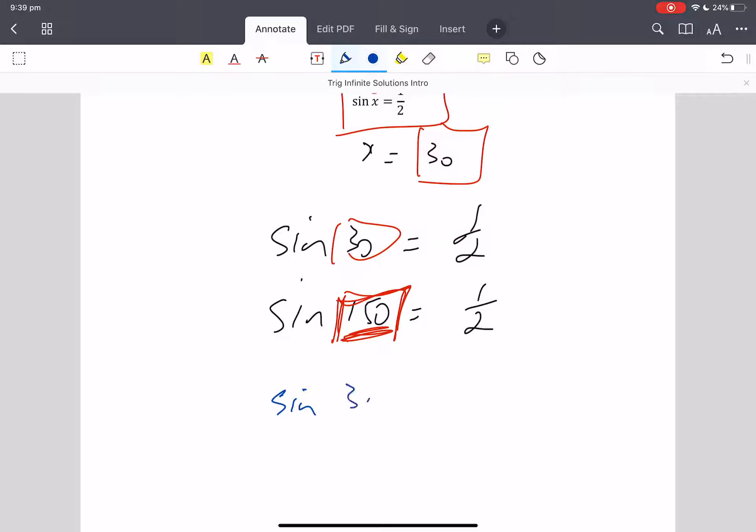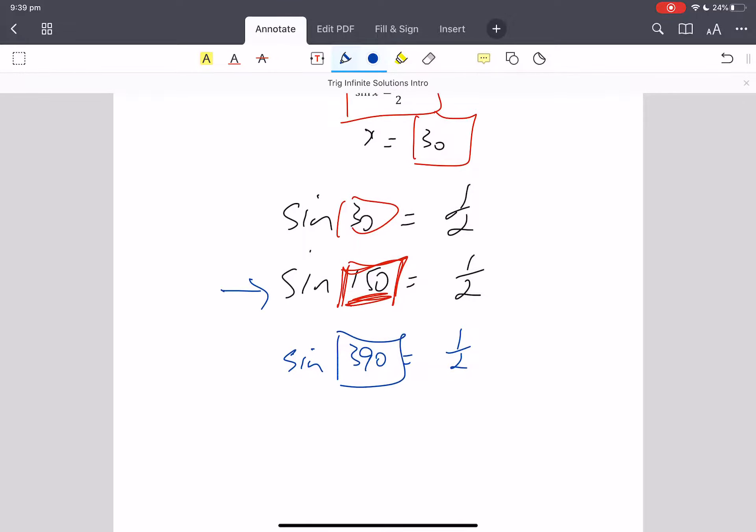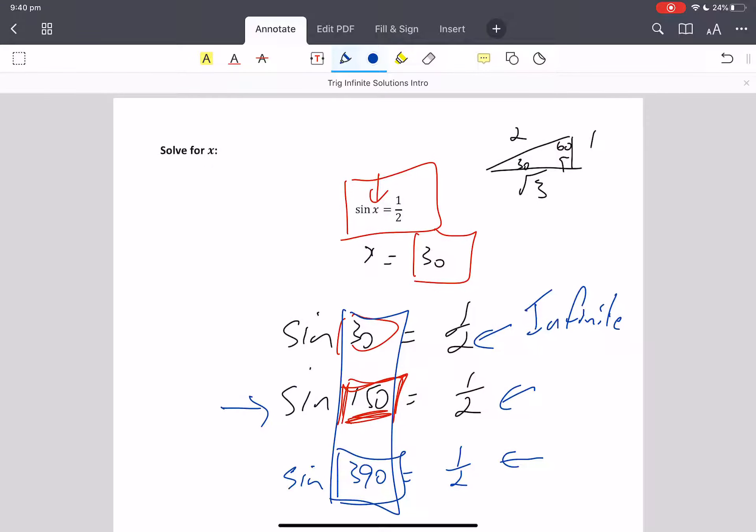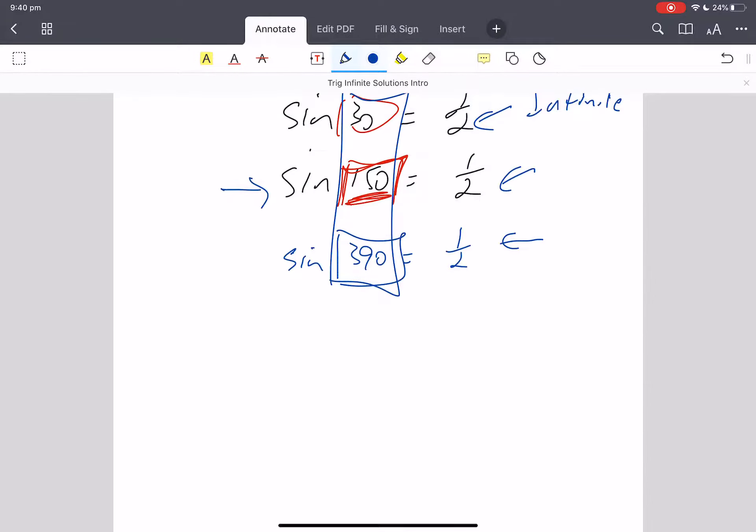How about our coterminal angles? What do you reckon sine 390 is? It's also a half. What's another coterminal? How many values can I put in? Well, there's actually an infinite number of values that we can put in there, and they're all going to get us a half. And therein lies a bit of a problem.